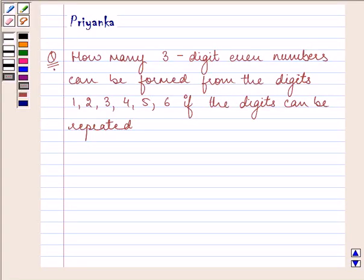Hi and how are you all today? Let us discuss this question. It says how many three-digit even numbers can be formed from the digits 1, 2, 3, 4, 5, 6 if the digits can be repeated.